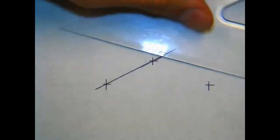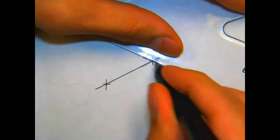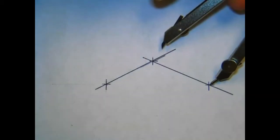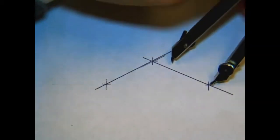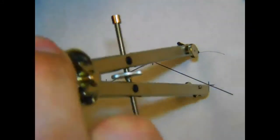This creates two chords for our circle or arc. Then we're going to bisect those lines using the traditional technique that we learned in the previous video.